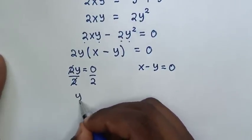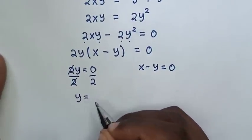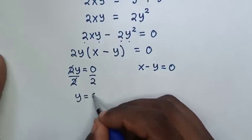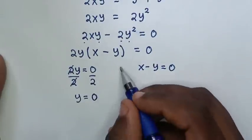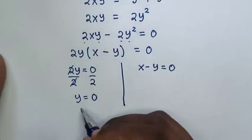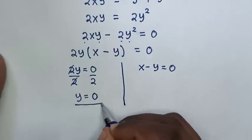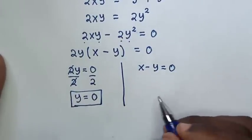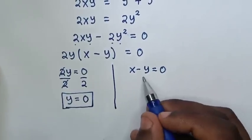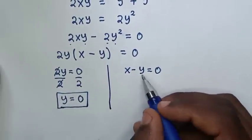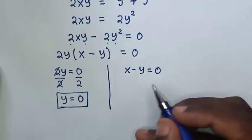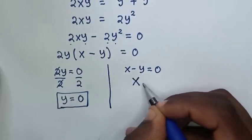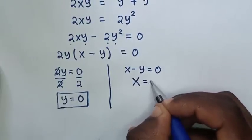Then y is equal to 0 divided by 2, which is 0. Therefore, the value of y is 0. Now, to solve the other solution, we take negative y to the right side, so x is equal to y.